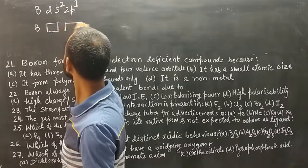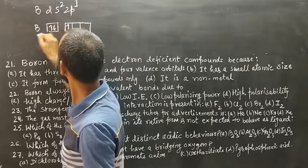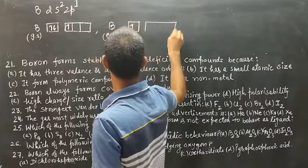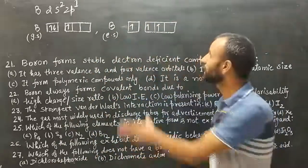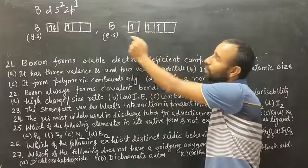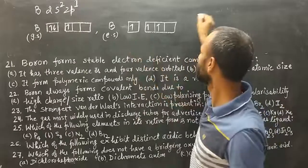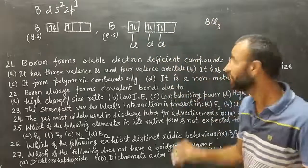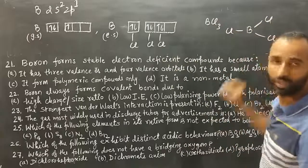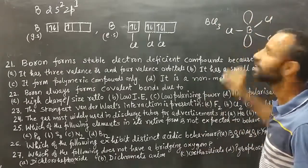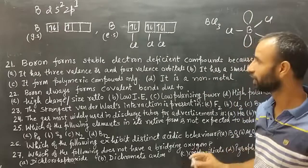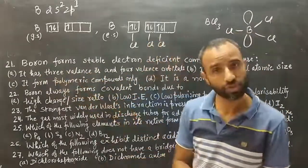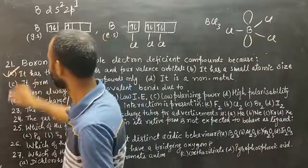In the ground state and excited state, boron has fewer electrons than the number of orbitals available. For example, BCl3: boron reacts with chlorine to form BCl3, which exists along with a vacant orbital. In this way, boron forms stable electron-deficient compounds because it has only 3 valence electrons but 4 available orbitals. Option A is correct.